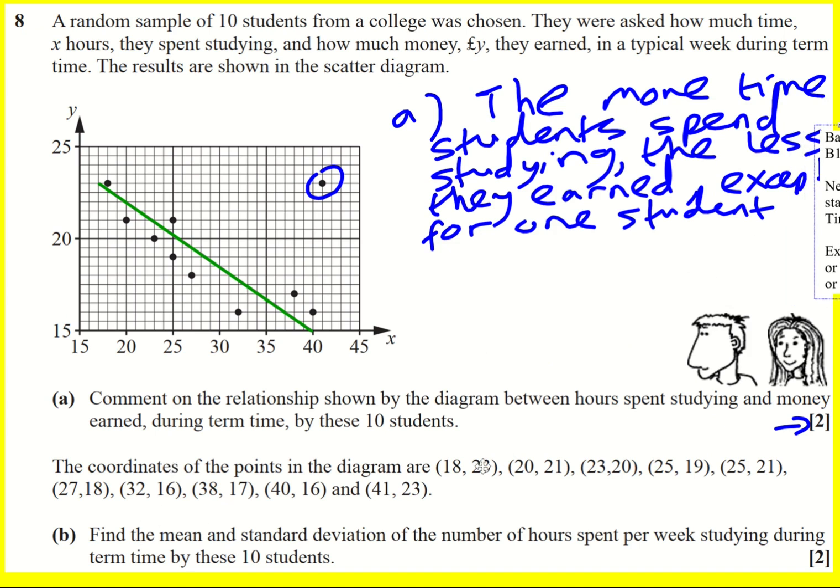We're then given the coordinates and asked to find the mean and standard deviation of the number of hours spent per week studying during term time. So that is going to be x. It wants us to find x bar and the standard deviation of x. So we can basically ignore y and just look at all the first numbers.